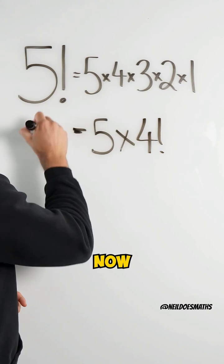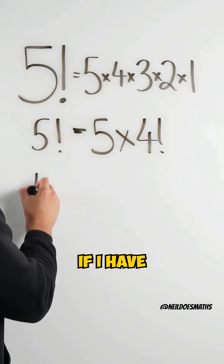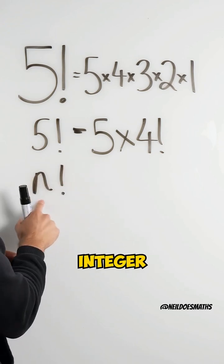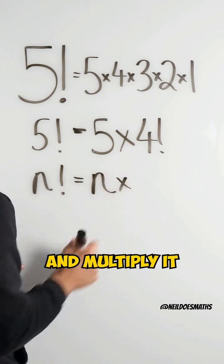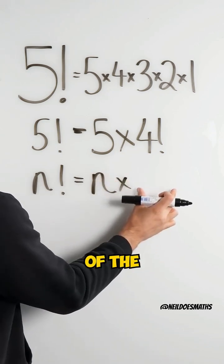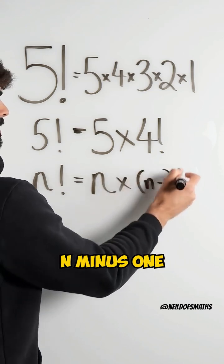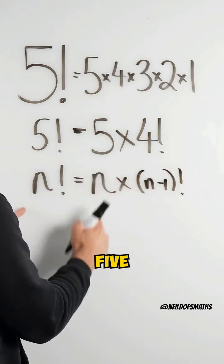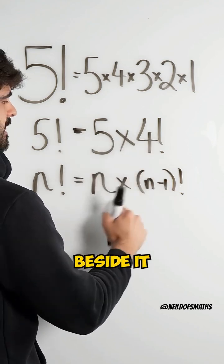Now I can generalize this. I can say if I have a number factorial where n is an integer, I can just take n and multiply it by the factorial of the integer that precedes it, which would be n minus one factorial. And then we are subtracting one to get the factorial beside it, n minus one.